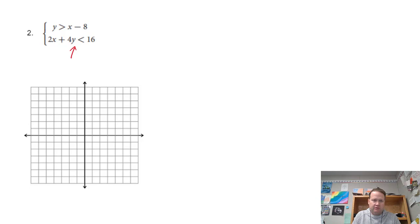This top inequality here, we already see how to graph it. It's y is greater than or equal to x minus 8. So we're going to go down 8. This graph only goes down 7, so I guess down 8 is probably something like that. But then it's got a slope of up 1 over 1, and it's going to be a dotted line because the inequality doesn't have anything under there.